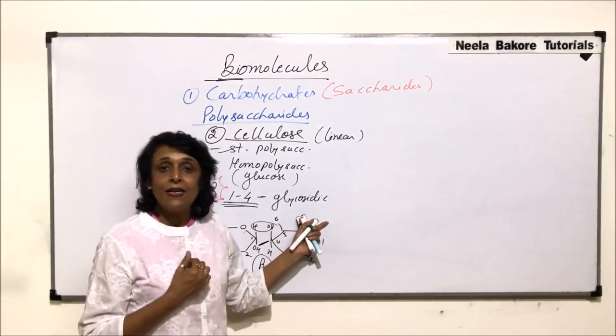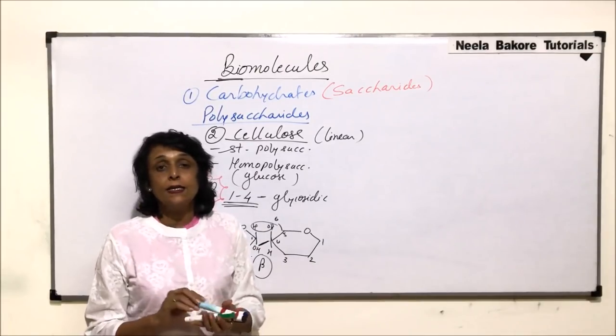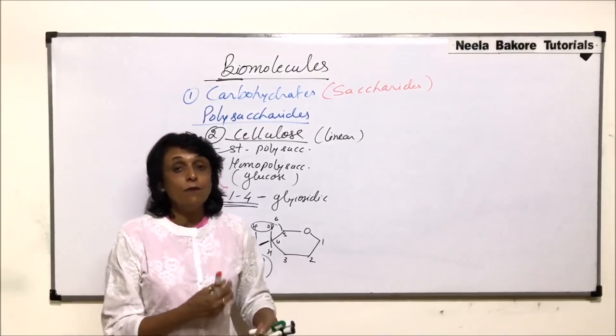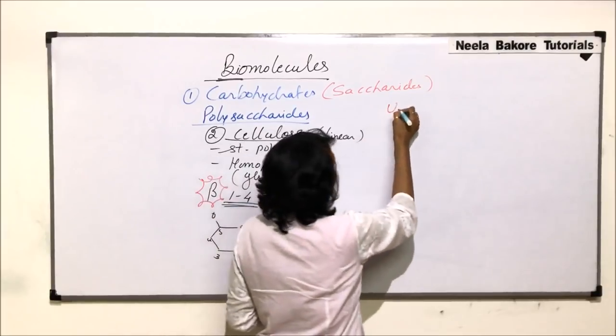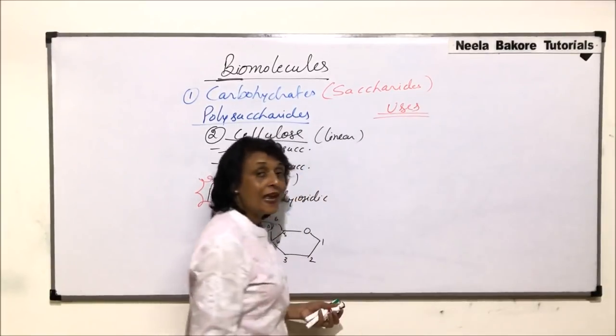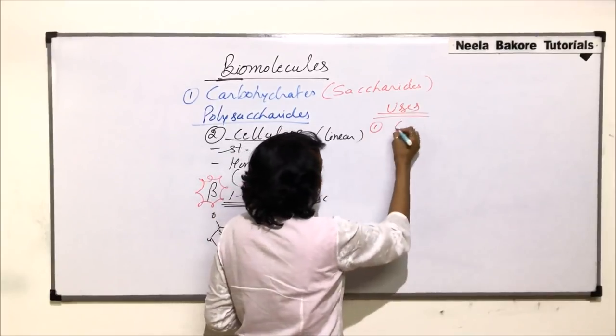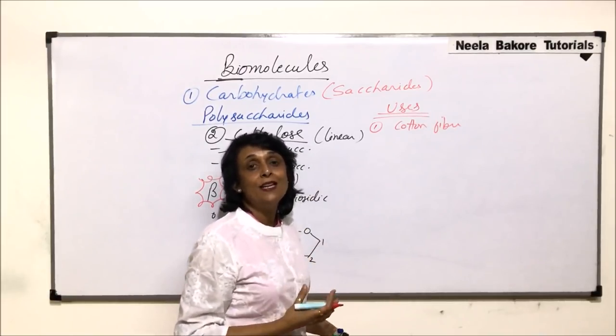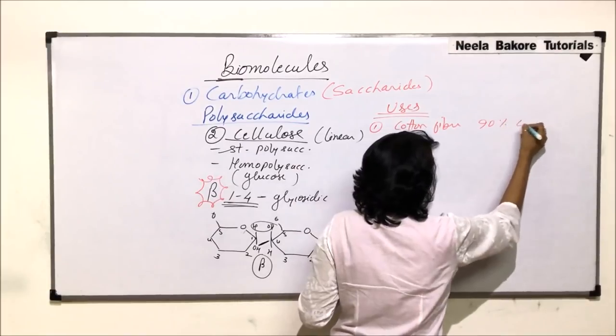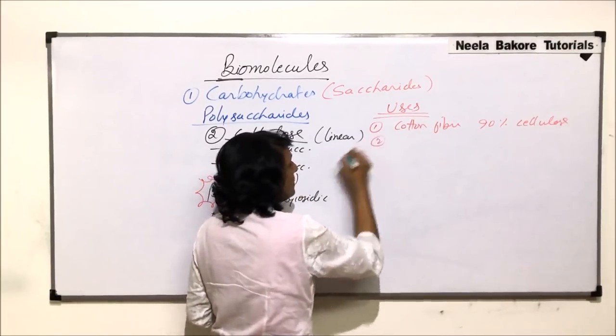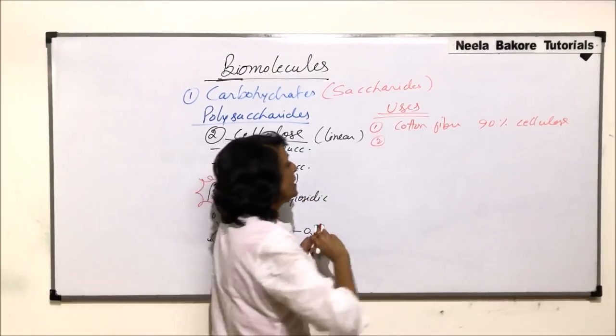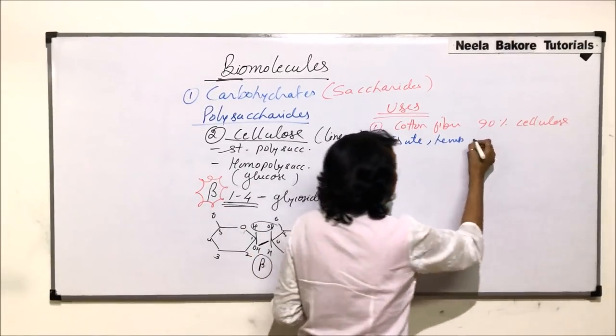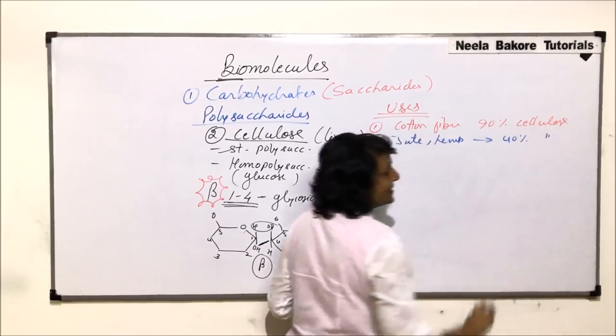So cellulose, again, another very important polysaccharide, is helping in formation of cell wall. Other than that, where else is cellulose present and can we use it in some other ways? If we have to sum up uses of cellulose, we can list out a few important things. Cotton fiber is actually 90% or more than 90% cellulose. Not only cotton, other fibers like jute and hemp also have 40% or more percent of cellulose.